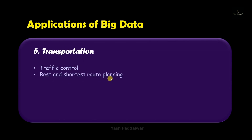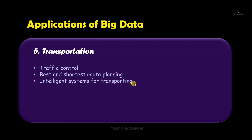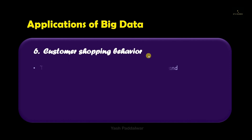The next application is in transportation. Big data can be used to control traffic, as IoT sensors installed at proper places can track traffic in a particular area. Big data can also be used to find the best and shortest route. If a user already knows that a particular area has traffic, they will find a new path — and this is possible only because of proper handling of big data. Intelligent systems such as smart vehicles can be built using big data, and collectively these applications can also help tourists.